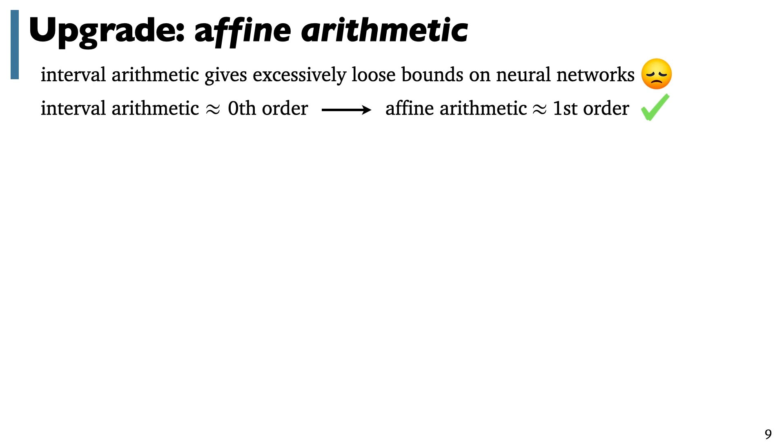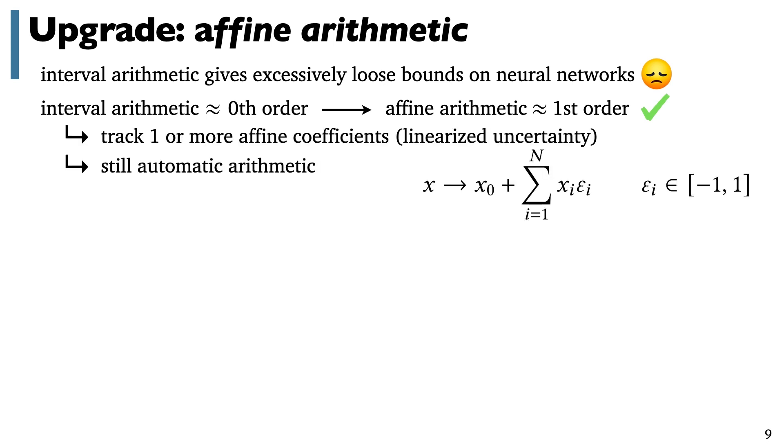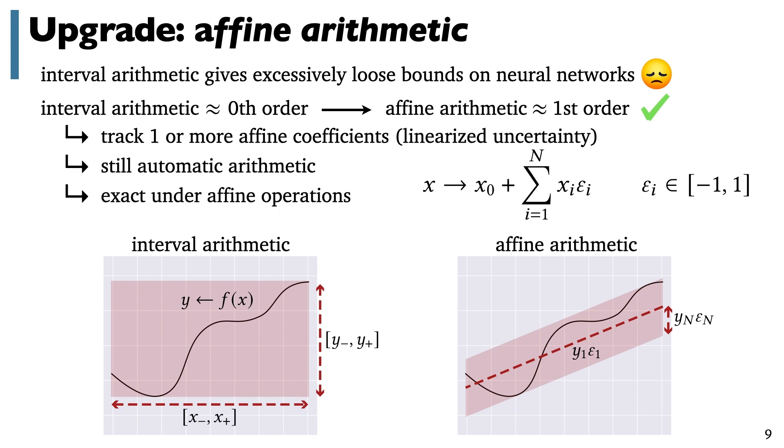Fortunately, if we dig a bit deeper, there are more advanced forms of range analysis beyond interval arithmetic. And in particular, we make use of affine arithmetic. You can think of affine arithmetic as being like a first order upgrade of interval arithmetic, where we track linearizations of error quantities for intermediate values inside of the network. This is still a fully automatic arithmetic scheme, but even better, it has the property that it automatically preserves bounds under affine operations, like the linear layers in our network.